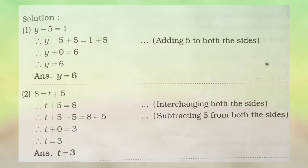The next question is 8 is equal to t plus 5. We will interchange both the sides and write t plus 5 is equal to 8. We will do the opposite operation — since plus 5 is given, we will subtract 5 from both the sides. Subtracting 5 from both the sides, the answer is t plus 0 is equal to 3. So the answer is t is equal to 3.